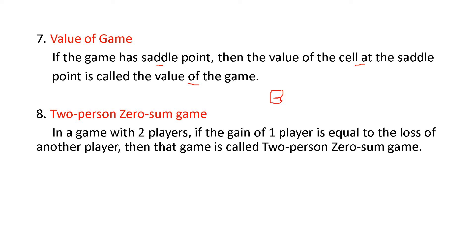Next point is two-person zero-sum game. In a game with two players, if the gain of one player is equal to the loss of another player, then that game is called a two-person zero-sum game. This ties back to the payoff matrix: a positive outcome is gain for player A and loss for player B, and a negative outcome is loss for player A and gain for player B.